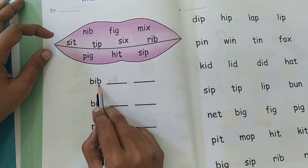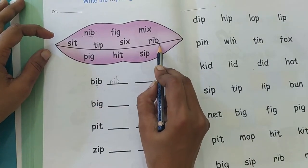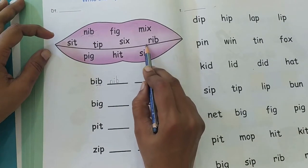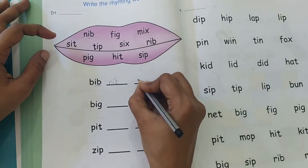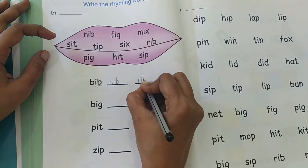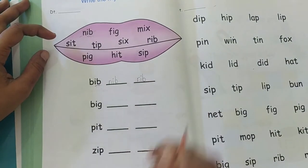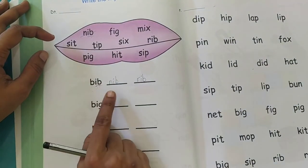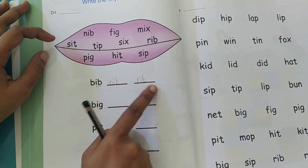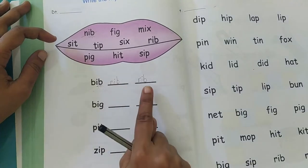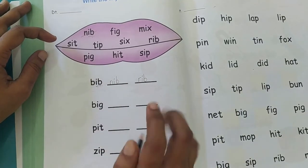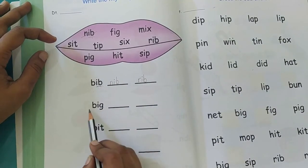RIB. Yes, it ends with I-B. RIB, BIB, these words rhyme. Correct? So you will write here RIB. So for every word here you have to find two rhyming words. So BIB, NIP, RIB, they are rhyming. Correct?